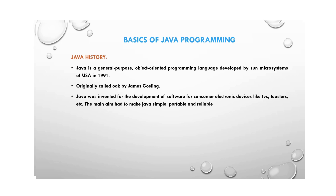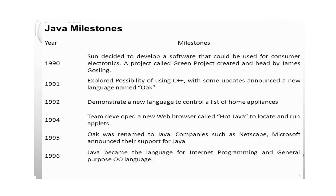The main aim was to make Java very simple, portable, and reliable. Java has some important milestones in its development. In 1990, Sun Microsystems decided to develop software that could be used for consumer electronic devices. This was a project named the Green Project.